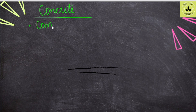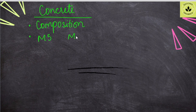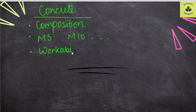In concrete, we ask about composition — which composition forms our concrete. We ask about nominal mixes: M5, M10, M20, M50 — what are their compositions? Then, workability of concrete is very important. In the mains exam, the workability effects are asked — what factors affect the workability of concrete.